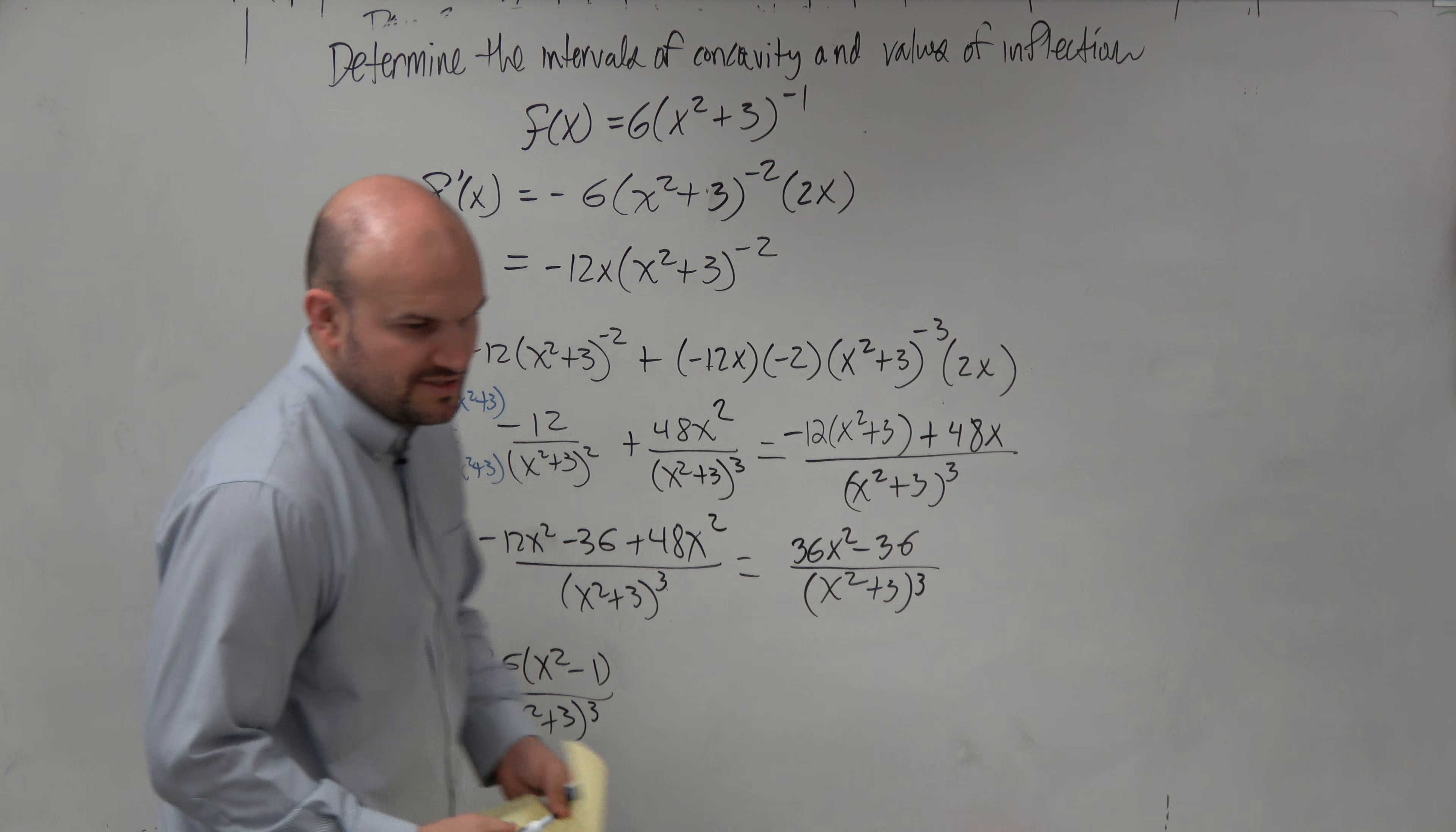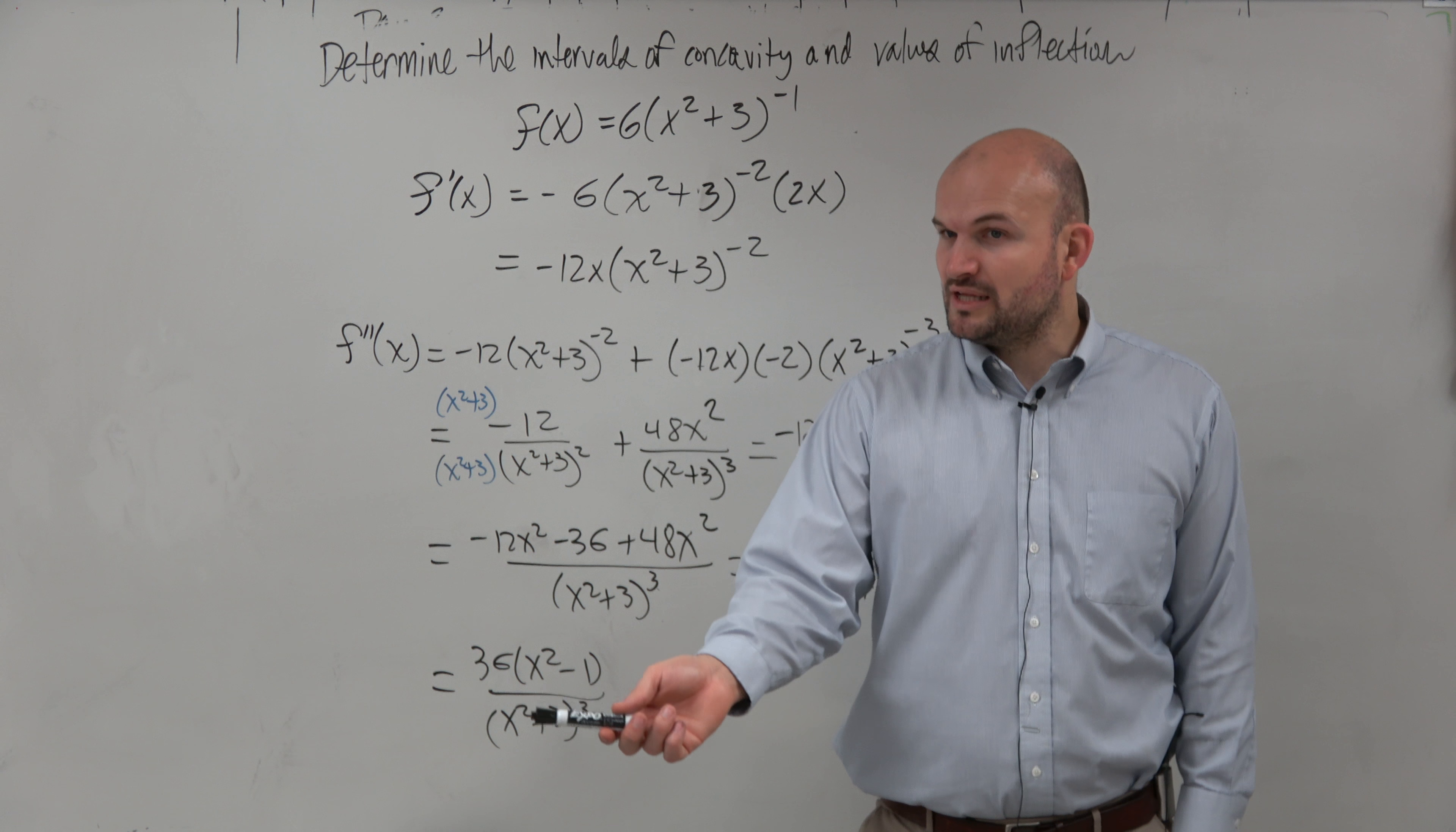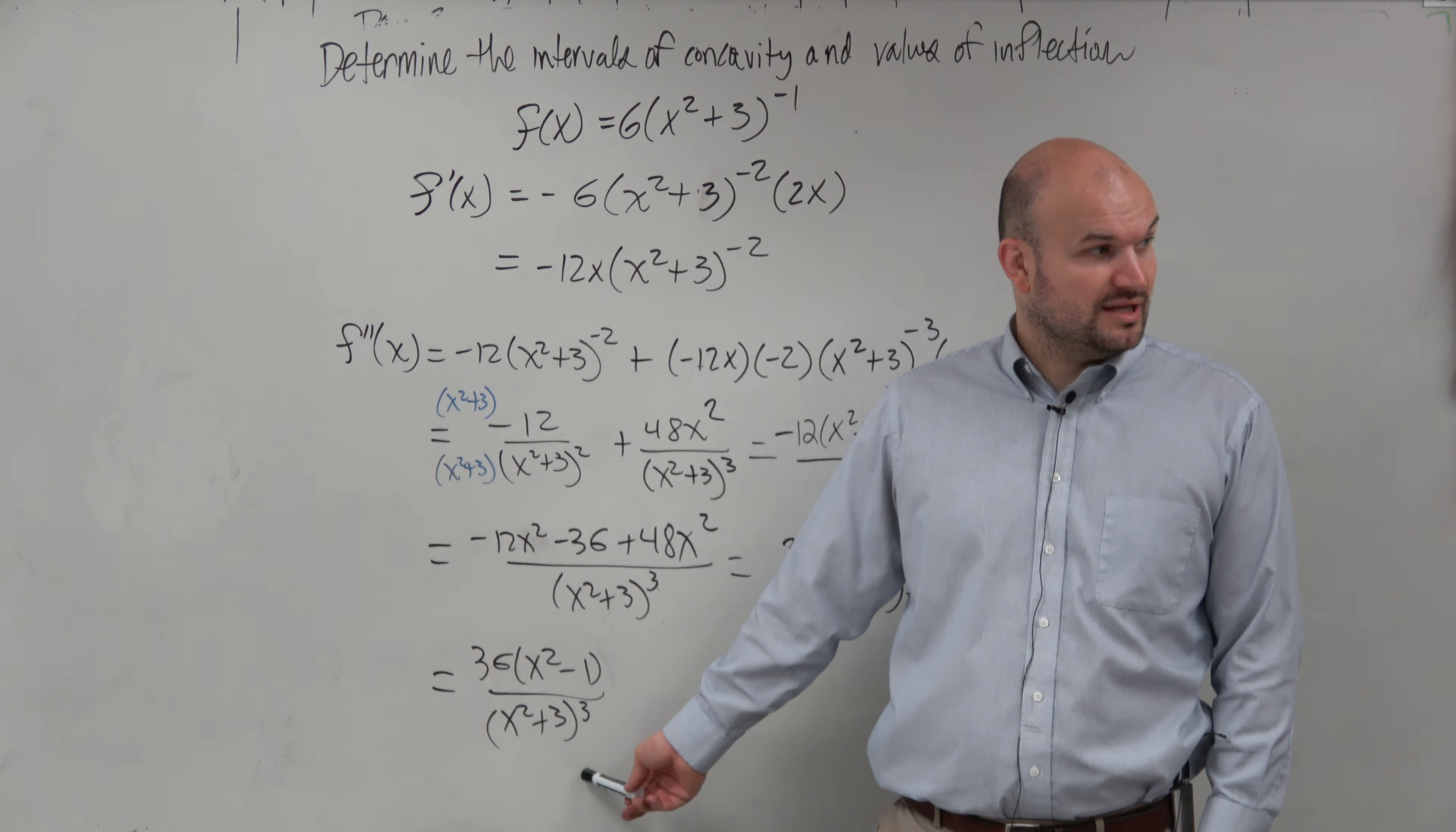OK. So let's go and look at our second derivative. Because our possible points of inflection are going to be when our second derivative is either equal to 0 or undefined, correct? We have a denominator, we have possible points of something being undefined. Well, let's look a little bit clearer. When we set our denominator equal to 0, is there actually any real numbers that are going to make our denominator equal to 0?